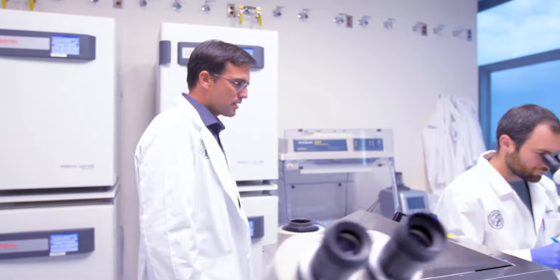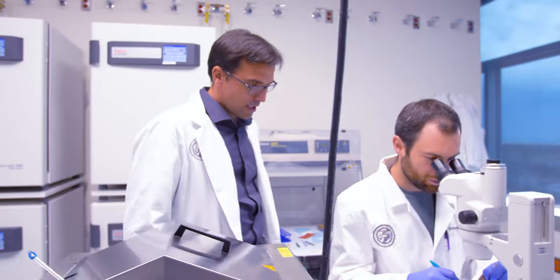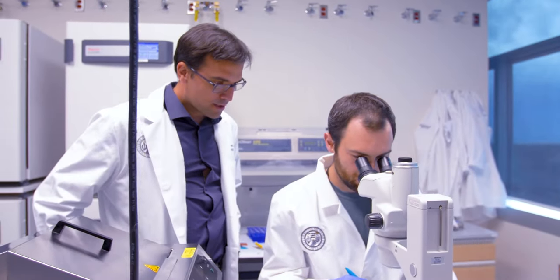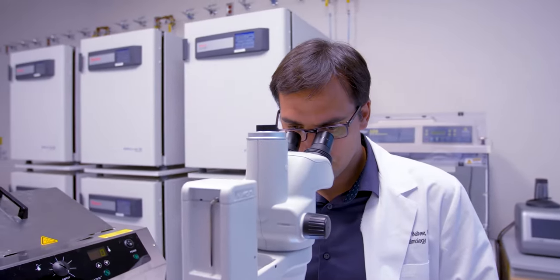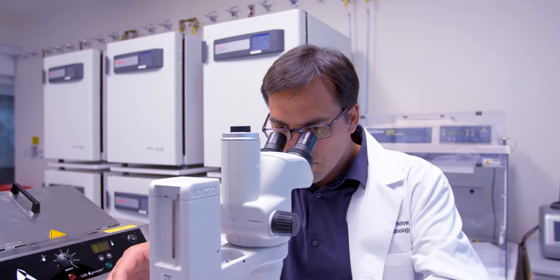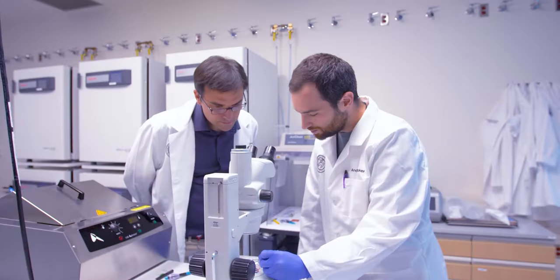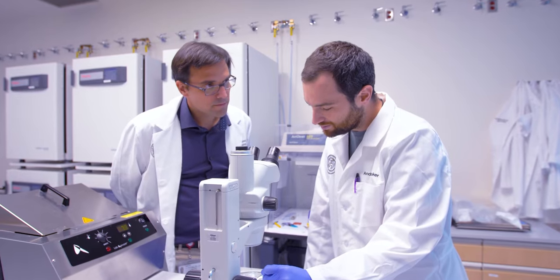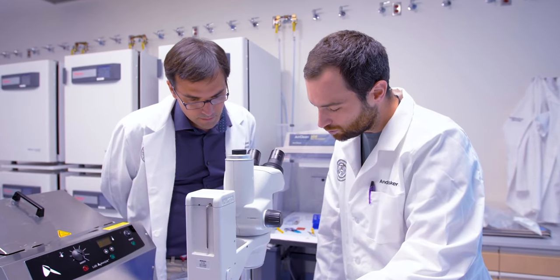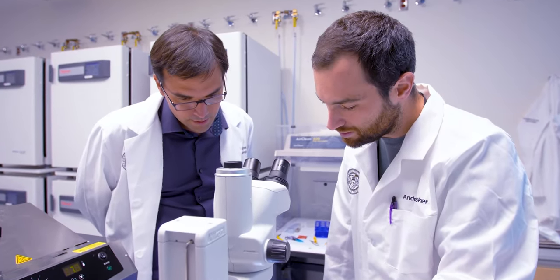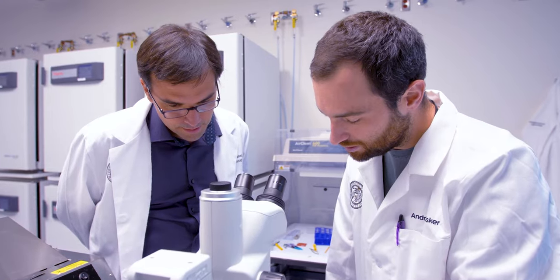Our retinal tissue complex recreates the cellular organization of the outer retina, including a layer of RPE cells, an outer nuclear layer that contains all photoreceptor subtypes, an outer plexiform layer, and the associated bipolar and horizontal interneurons, as well as Mueller glial cells.